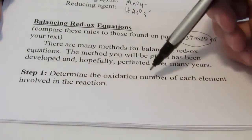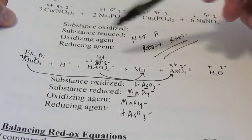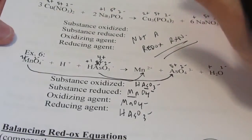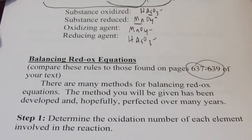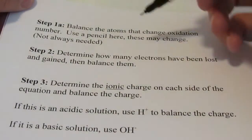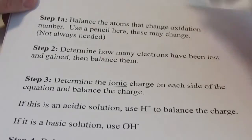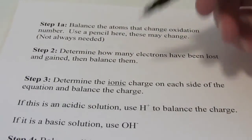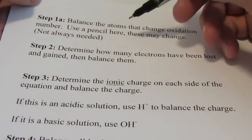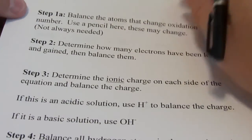Step one: determine the oxidation number of each element involved in the reaction. We did that a lot in the previous two videos — we learned how to assign oxidation numbers and determine what was oxidized, what was reduced, etc. Step one in balancing redox equations is to determine the oxidation number of each element. And step 1A: balance those atoms that change oxidation numbers. I would use a pencil when doing this — I'll be using a pen because it shows up nicely on camera — but use a pencil since you'll be erasing a lot.